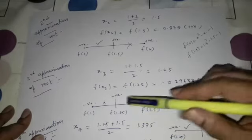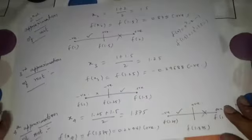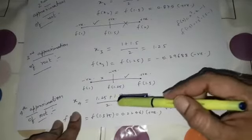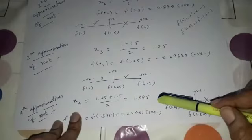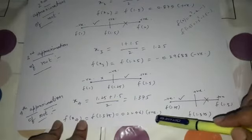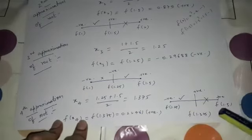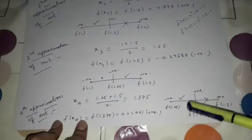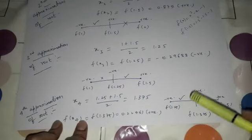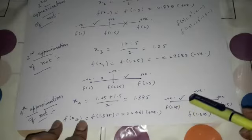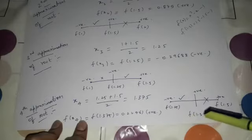Halving the interval again, the fourth approximation of root: x4 = (1.25 + 1.5)/2 = 1.375. So f(1.375) is a positive number. Applying the intermediate value theorem again, the root lies between 1.25 and 1.375. The new interval is 1.25 to 1.375.